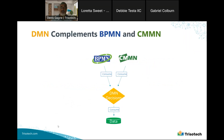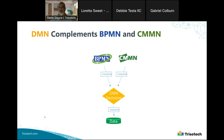DMN is really meant to complement BPMN and CMMN. You can think of BPMN processes consuming DMN decisions, or CMMN cases consuming DMN decisions, which in turn consume data. There is a complementary relationship between the three standards that I've referred to for years as the triple crown of process modeling.